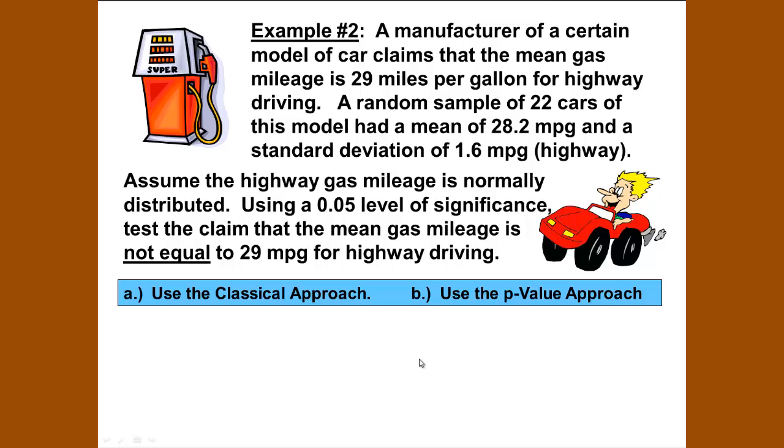We are ready to begin example 2. A manufacturer of a certain model of car claims that the mean gas mileage is 29 miles per gallon for highway driving. A random sample of 22 cars for this model had a mean of 28.2 miles per gallon and a standard deviation of 1.6 miles per gallon highway. Assume the highway gas mileage is normally distributed using a 0.05 level of significance. Test the claim that the mean gas mileage is not equal to 29 miles per gallon for highway driving. Use the classical approach and use the p-value approach.